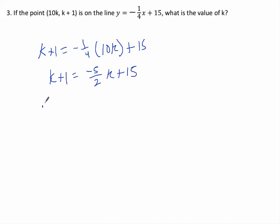I will multiply everything by 2 to get rid of the fraction. Add 5k to both sides, 7k plus 2 equals 30, 7k equals 28, so k equals 4.